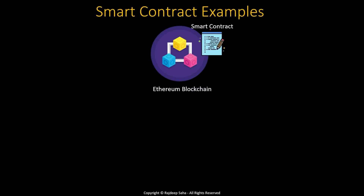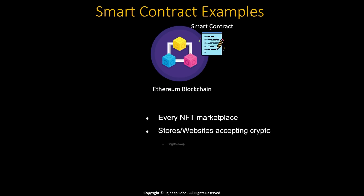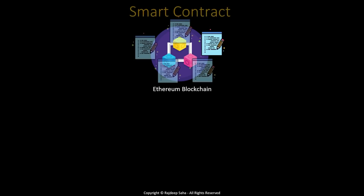Some other smart contract examples include literally every NFT marketplace, any store or website accepting cryptocurrency, crypto swaps — for example, Bitcoin to US dollar or Bitcoin to Ethereum — and more. As you can tell, any crypto, blockchain, or NFT application needs to use smart contracts.